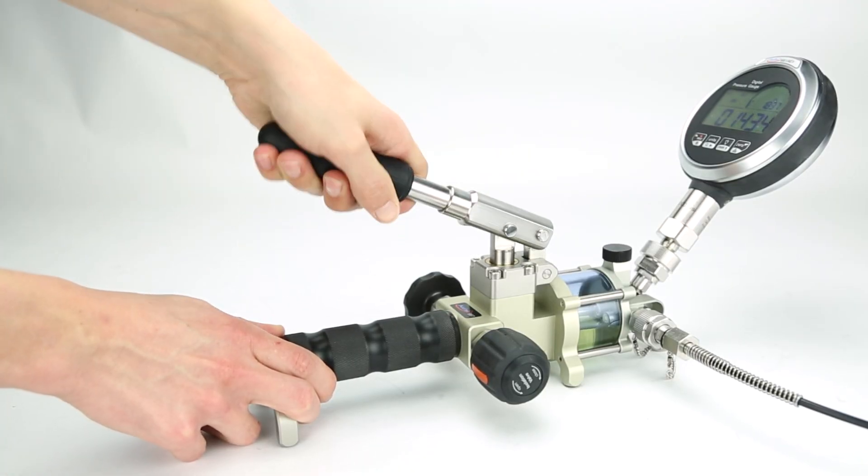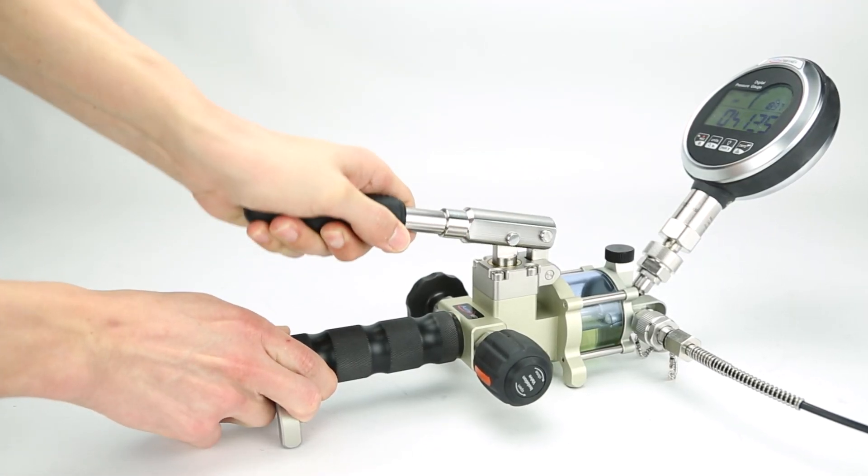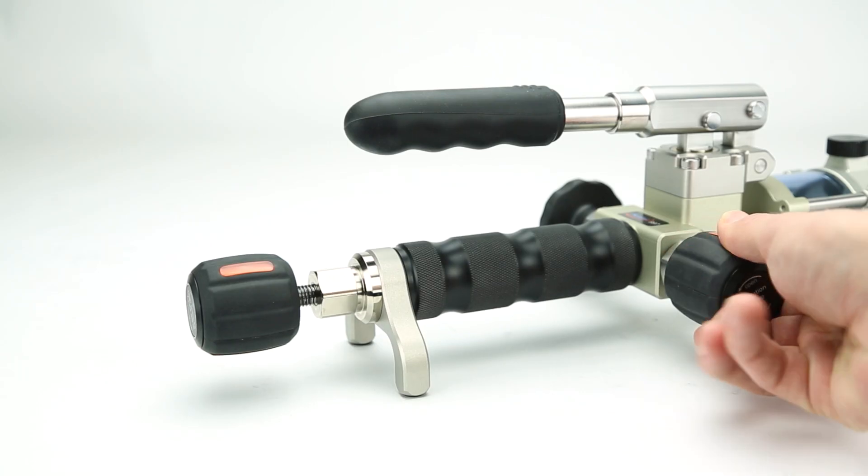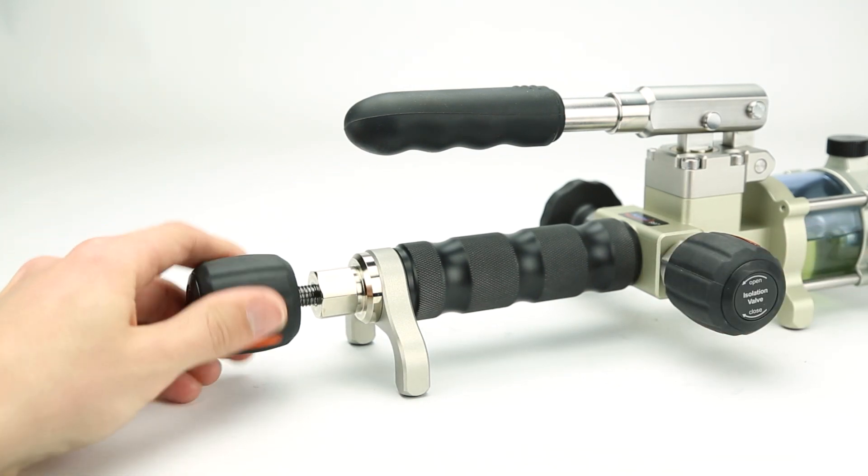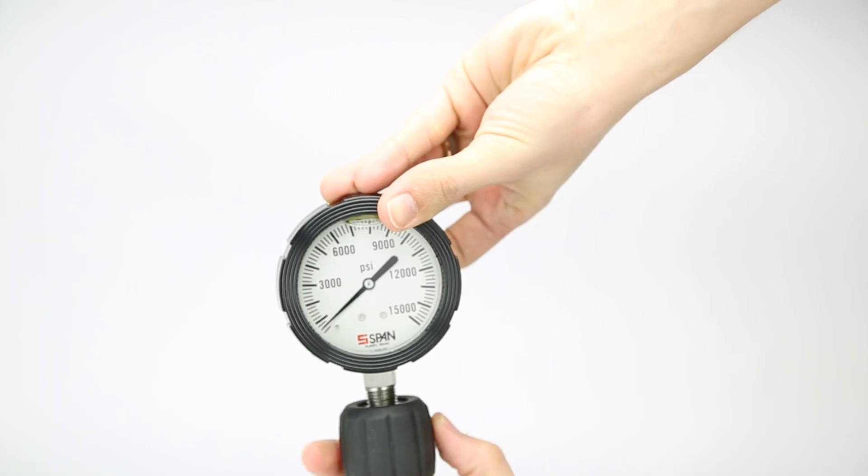When pressurizing, it will be difficult to go past 7,000 PSI using only the lever arm. At this point, close the isolation valve and generate the rest of the pressure using the fine adjust knob.